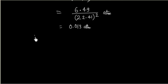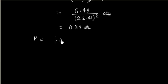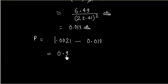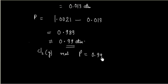Now we can calculate the total pressure: P = Term 1 - Term 2 = 1.0021 - 0.013 = 0.989, approximately 0.99 atmospheric pressure. So for chlorine gas, which is a real gas, the pressure is less than 1 atmospheric pressure — it is 0.99 atmospheric pressure.